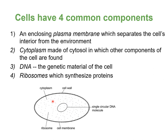Third, all cells have DNA. Eukaryotic DNA is contained in a nucleus, while prokaryotic DNA is a single circular DNA molecule, just free-floating in the cell. Fourth, all cells have ribosomes — those little dots you see — which are protein synthesizers. So all cells have these four things: plasma membrane, cytoplasm, DNA, and ribosomes.